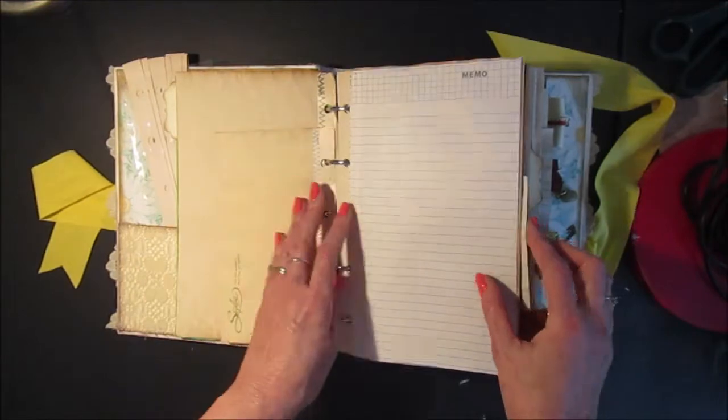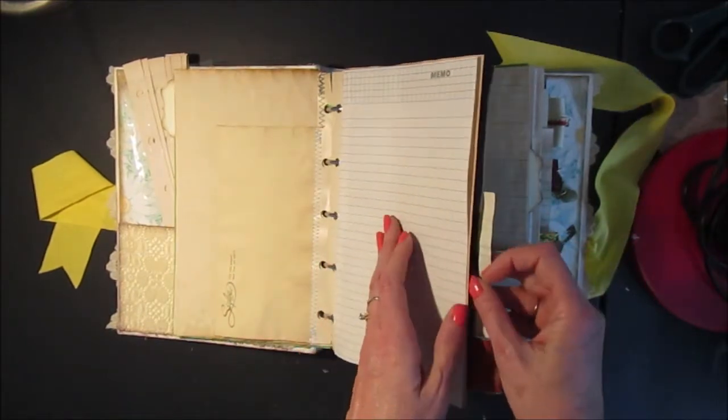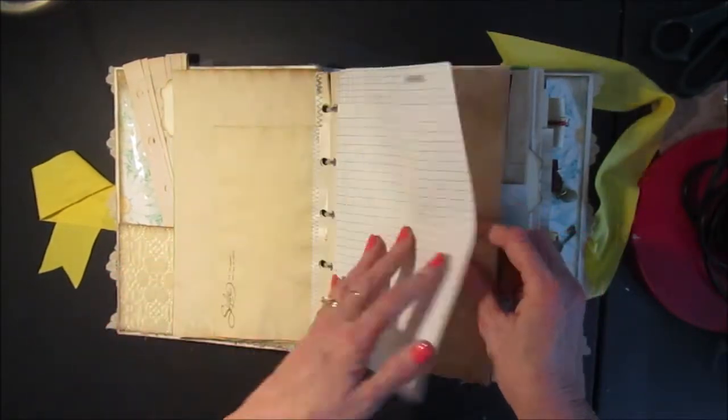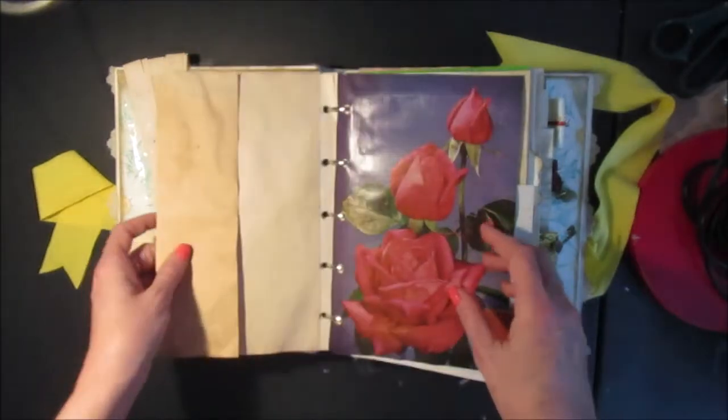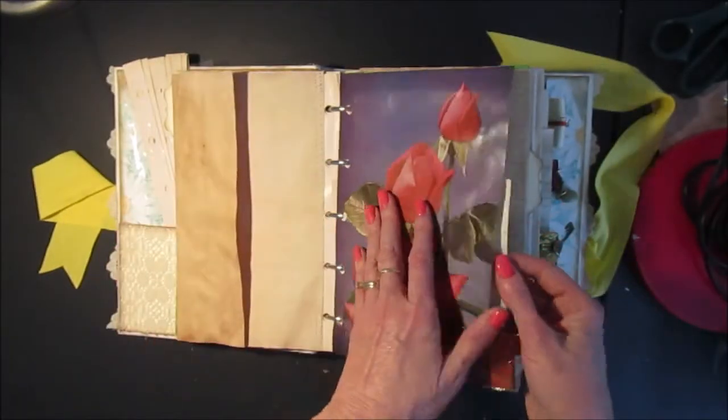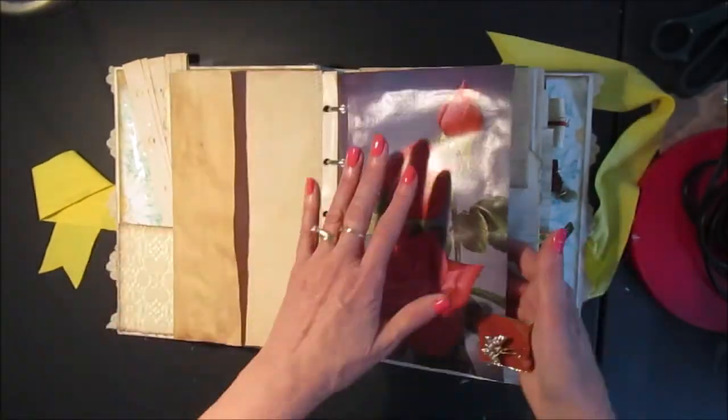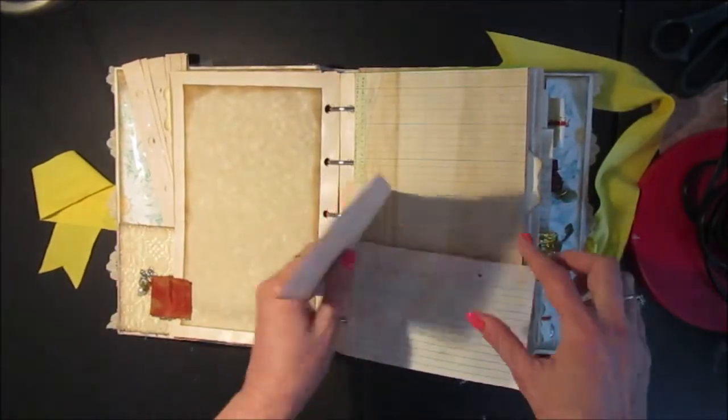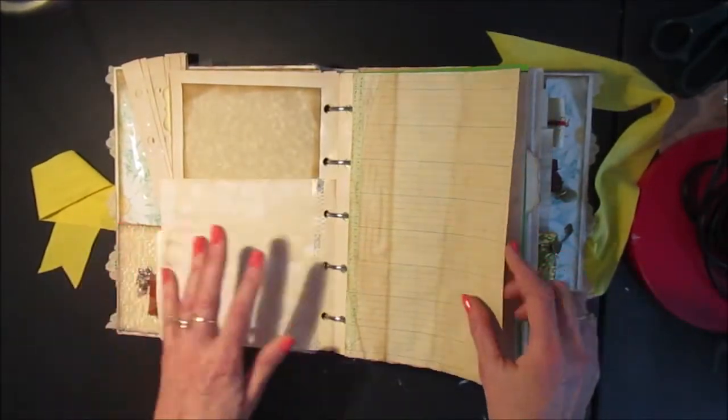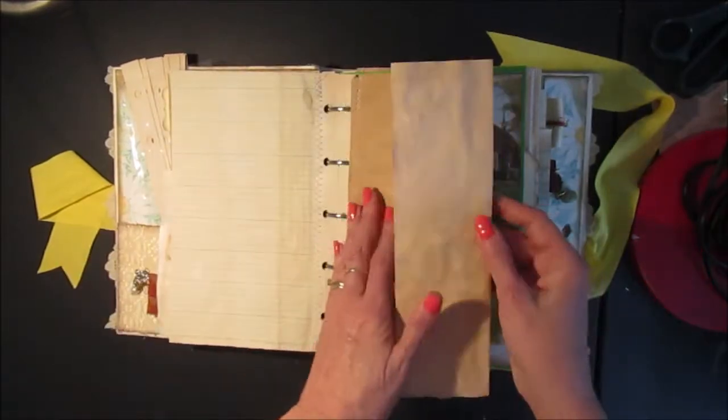Here's an envelope and some memo paper. And these are some of the images from the original Better Homes and Gardens book. I've got some index cards in there.